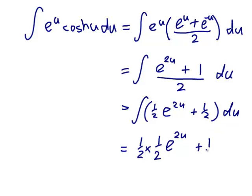And the half is a constant, so that will go up to one half times u plus c. So I've got one half of e to the 2u plus one half of u plus c.